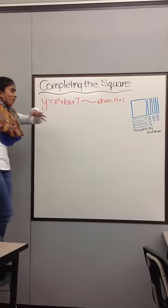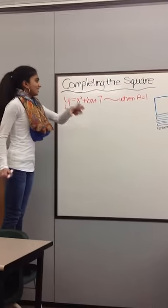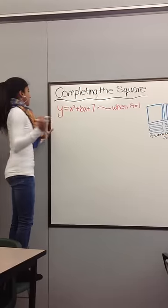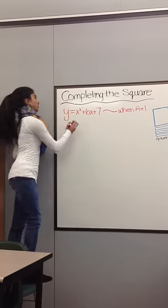Completing the square helps find the x-intercept for quadratic formula. The first thing you would do is make this equation equal to 0.